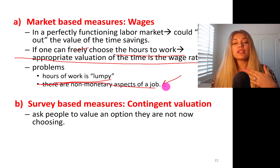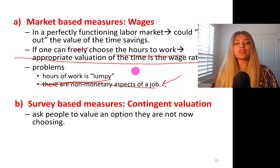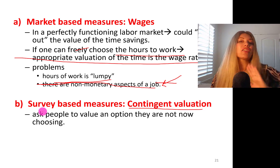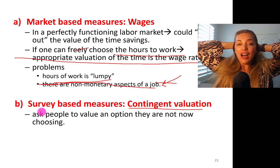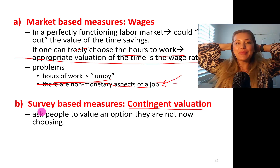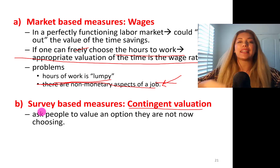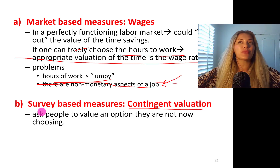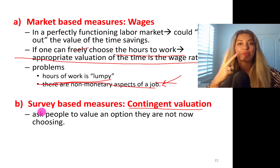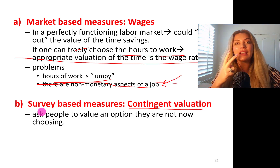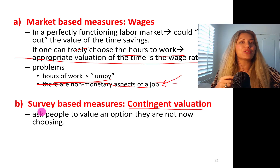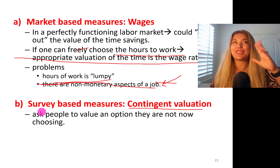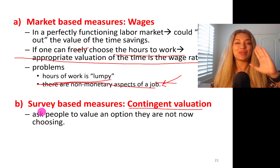The second way to measure time saved driving with the new improved highway is a survey-based measure — this is contingent valuation. You can ask people to value an option that they are not choosing. If somebody asks me how much would you be willing to pay to get to work in one minute instead of two hours, I can tell them how much I'm willing to give up to have a shorter commute.